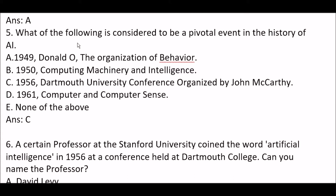Next question: what is considered to be a pivotal event in the history of AI? Option A: 1949, Donald Hebb's 'The Organization of Behavior.' Option B: 1950, 'Computing Machinery and Intelligence.' Option C: 1956, Dartmouth University Conference organized by John McCarthy. Option D: 1961, 'Computers and Common Sense.' The right answer is Option C — the 1956 Dartmouth University Conference is considered a pivotal event in the history of artificial intelligence.